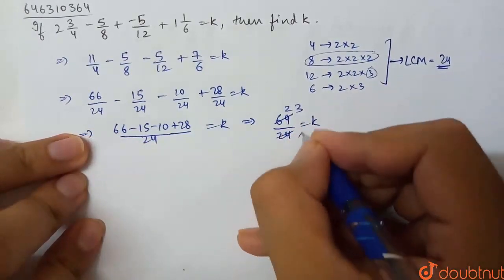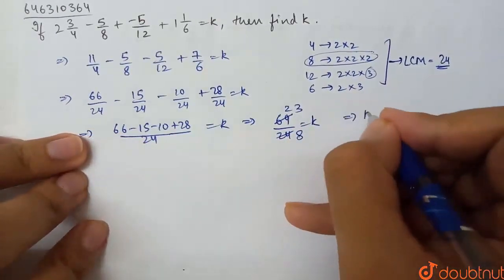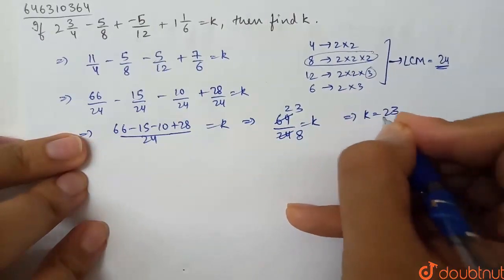Now cancel by 3: 69 divided by 3 is 23, and 24 divided by 3 is 8. So k equals 23/8.